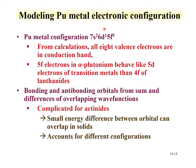The electron configuration of metallic plutonium involves a mixture of F, D, and S orbitals. From calculations, all eight valence electrons are in conducting bands. The 5F electrons in alpha plutonium behave more like 5D electrons of transition metals than the 4F electrons of the lanthanides. The 4F electrons are not involved in bonding, whereas in plutonium the 5F electrons are. The bonding and anti-bonding orbitals from overlapping wave functions are complicated for the actinides, and small energy differences between orbitals can overlap in solids, accounting for the different configurations that manifest in plutonium metal.